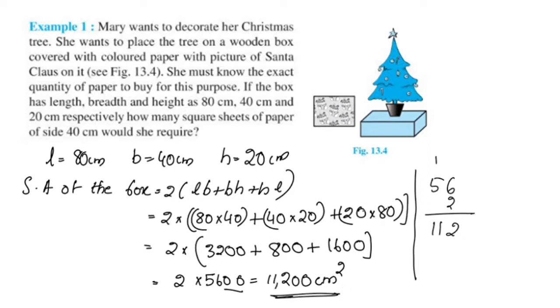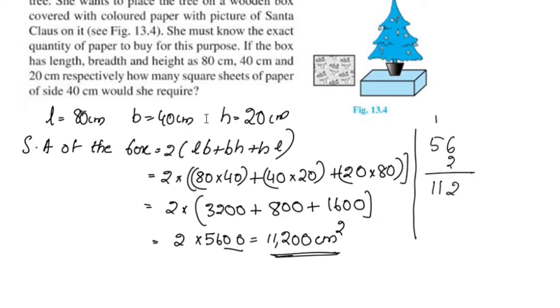This is a cuboid box. We need to find the paper on the side. How many square sheets of paper on side 40 centimeter would she require? The side is 40 centimeter, so it makes 40 centimeter square. The square box is 40 cm square sheet.